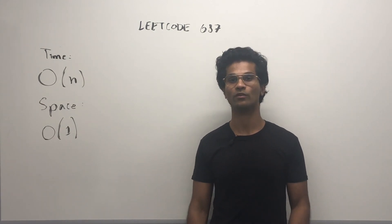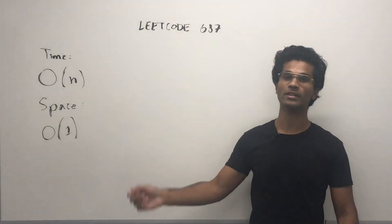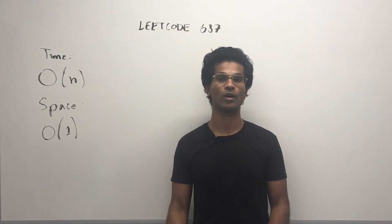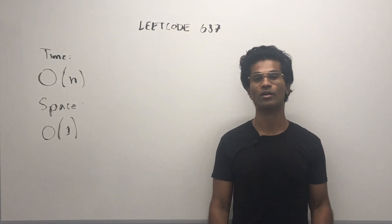So that's how you solve LeetCode 687. Let me know what you think in the comments below and if you'd like to see more, don't forget to subscribe.